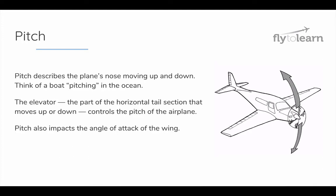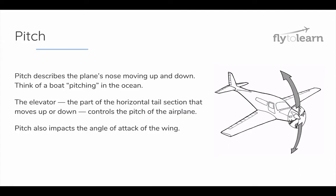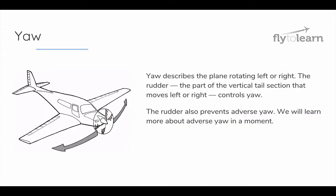Pitch describes the plane's nose moving up and down — you can think about it like a boat pitching on the ocean, or similar to the rotation of someone doing a somersault. The elevator, the part of the horizontal tail section that moves up or down, controls the pitch of the airplane. Pitch also impacts something called the angle of attack of the wing, which is important for lift. Yaw describes the plane rotating left or right, similar to the rotation of a ballerina spinning. The rudder, the part of the vertical tail section that moves left or right, controls yaw. The rudder also prevents adverse yaw, as we mentioned before.